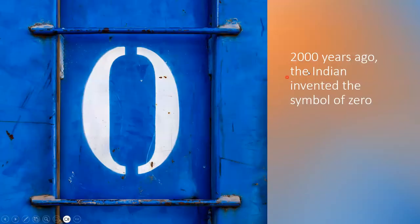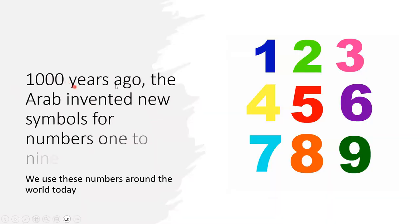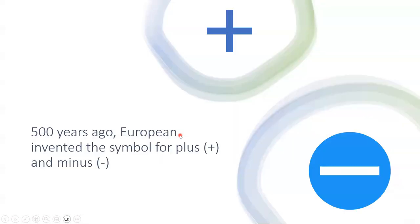2,000 years ago, the Indians invented the symbol for zero — this is zero, zero before one. 1,000 years ago, the Arabs invented new symbols for numbers 1 to 9. We use these numbers around the world today. 500 years ago, the Europeans invented the symbols for plus and minus. 1 plus 1 equals 2; 1 minus 1 equals 0.